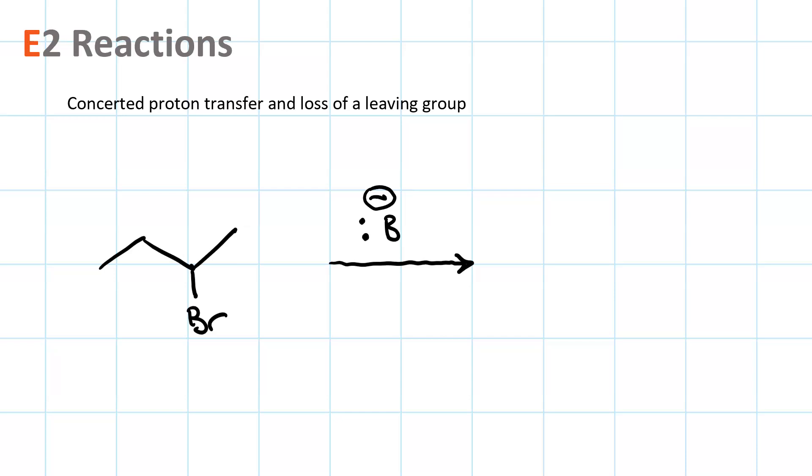Now, the base is going to attack a beta proton. Remember, the carbon connected to the leaving group is the alpha carbon. Carbons connected to the alpha carbon are beta carbons. So I have five different beta protons that we could attack here.